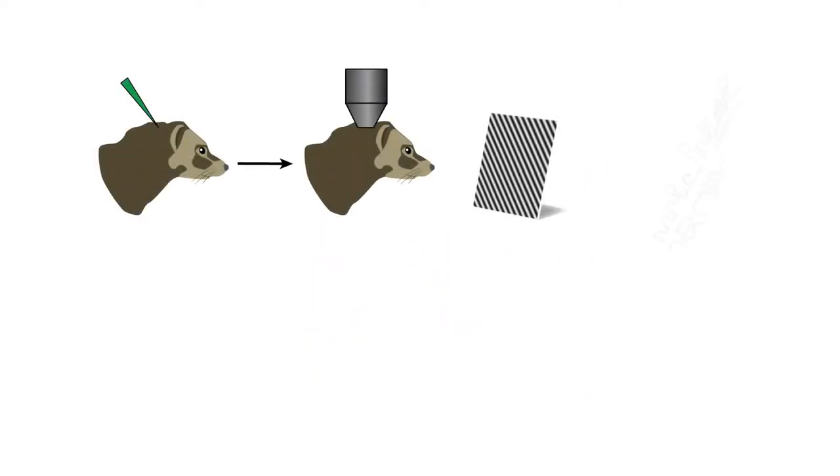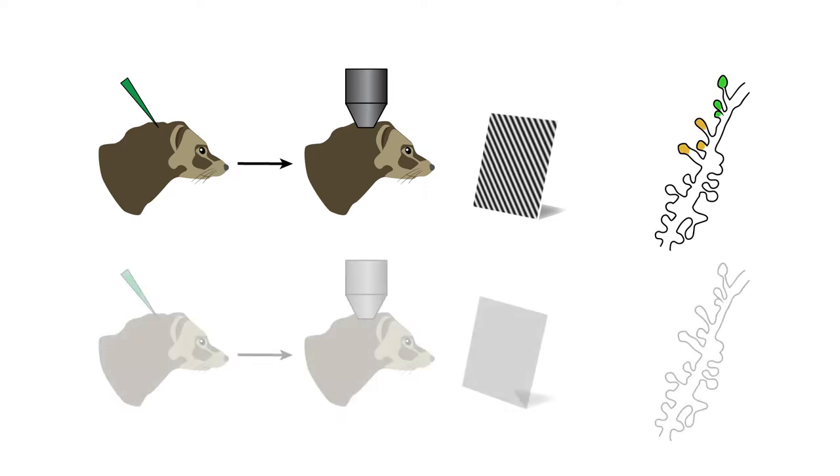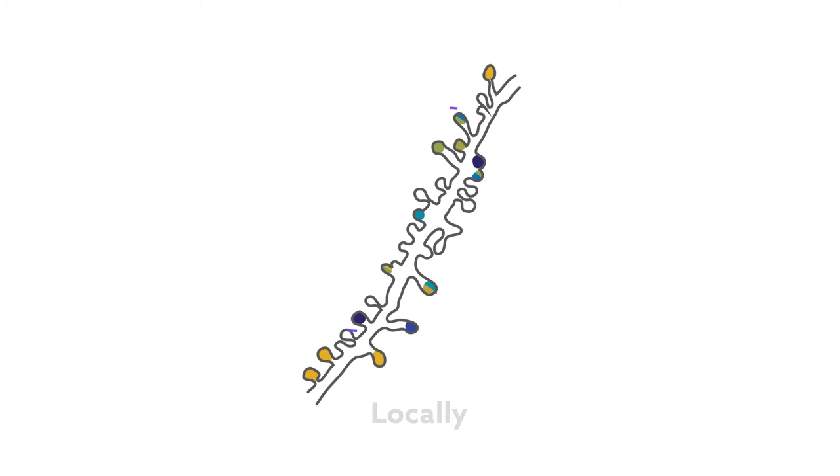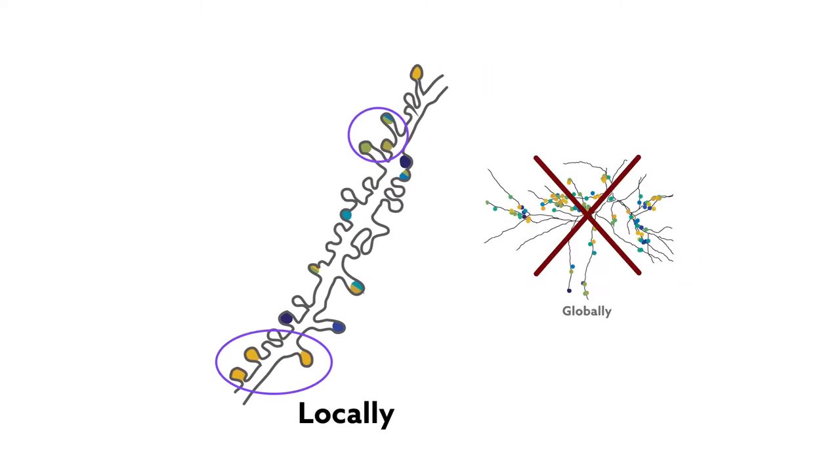The team also observed local clustering when they showed other types of visual stimuli or when neurons responded spontaneously in the absence of visual stimulation, suggesting that this phenomenon is a common property of how neurons connect with one another and process a variety of sensory information. These findings demonstrate that synaptic inputs in the visual cortex are locally, but not globally, organized.